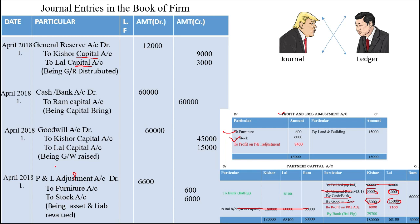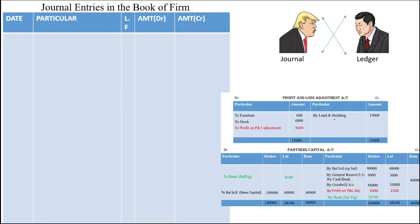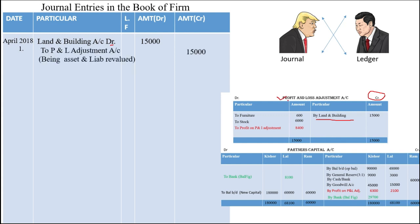Now, land and building — the ledger says credit side, but while passing the journal entry it comes to the debit side. Remember, journal and ledger are always opposite to each other: if ledger writes credit, journal will write debit. So land and building account debit, to profit and loss adjustment account. Always question yourself and you will automatically get the answer — this will help you remember during the exam. This entry is also done.